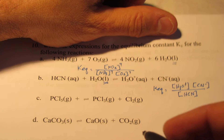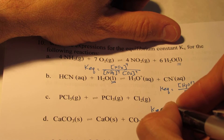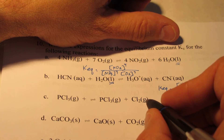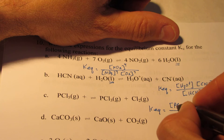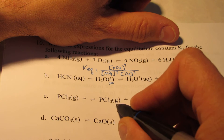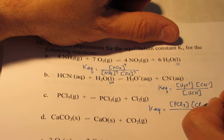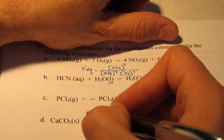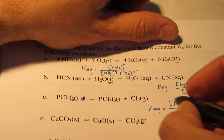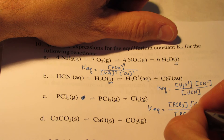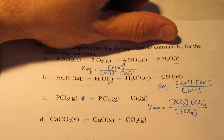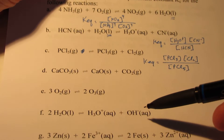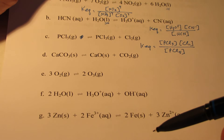Let me do one more quickly to make sure you've got it. KEQ for the third one — both of my products are gases, so I can include them: PCl3 and Cl2 concentrations. My reactant is a gas as well — there's a typo there, but that's just PCl5. And we're done with the third one. You can work on the others; if you have questions, come see me, but they're pretty straightforward.